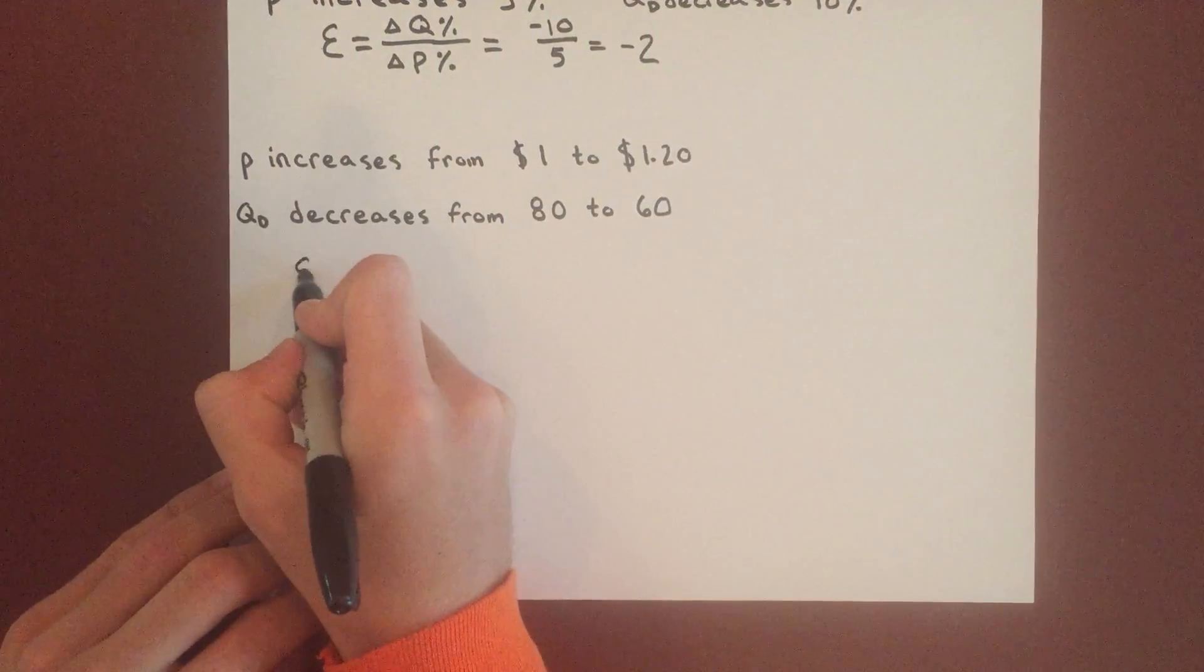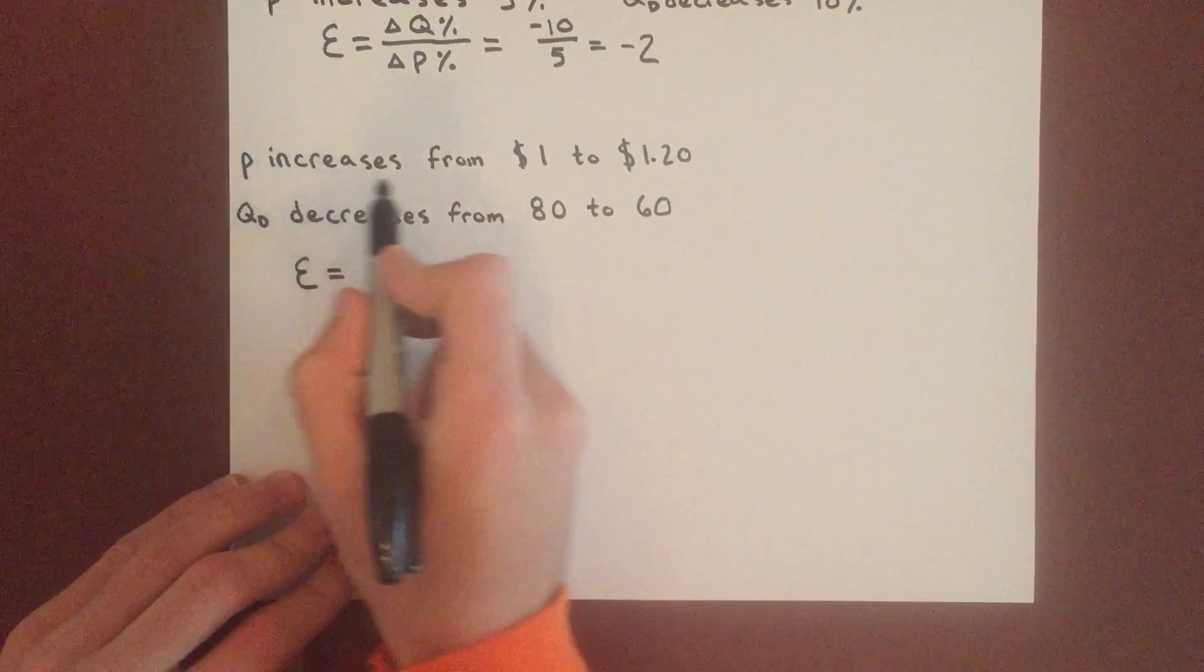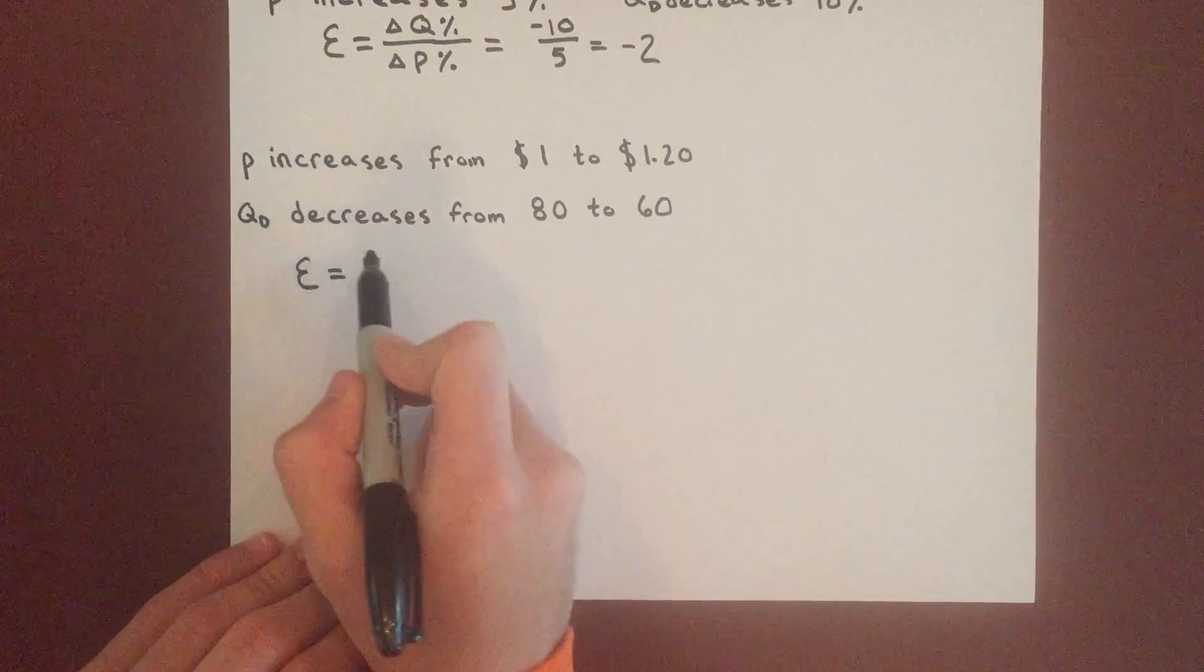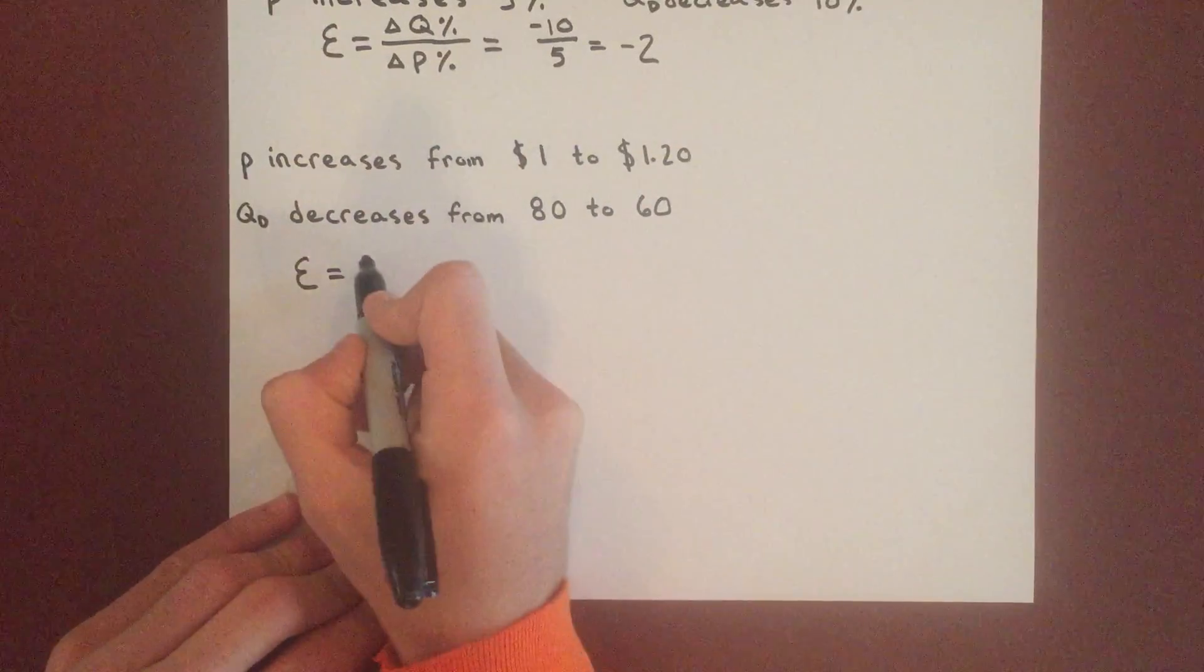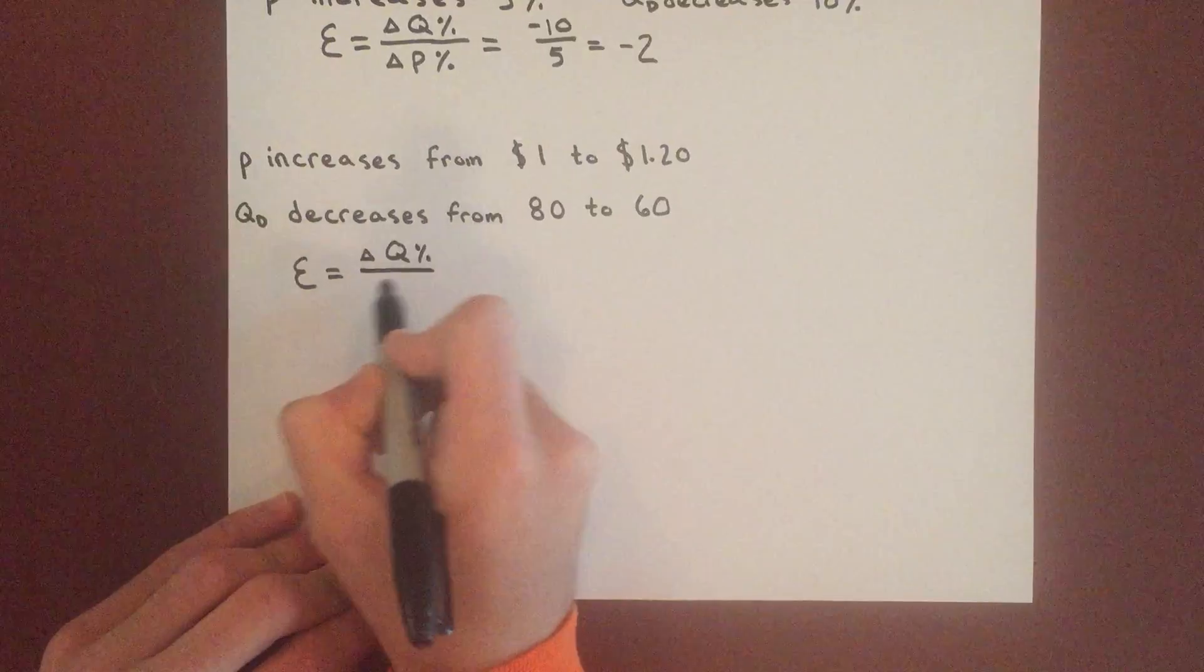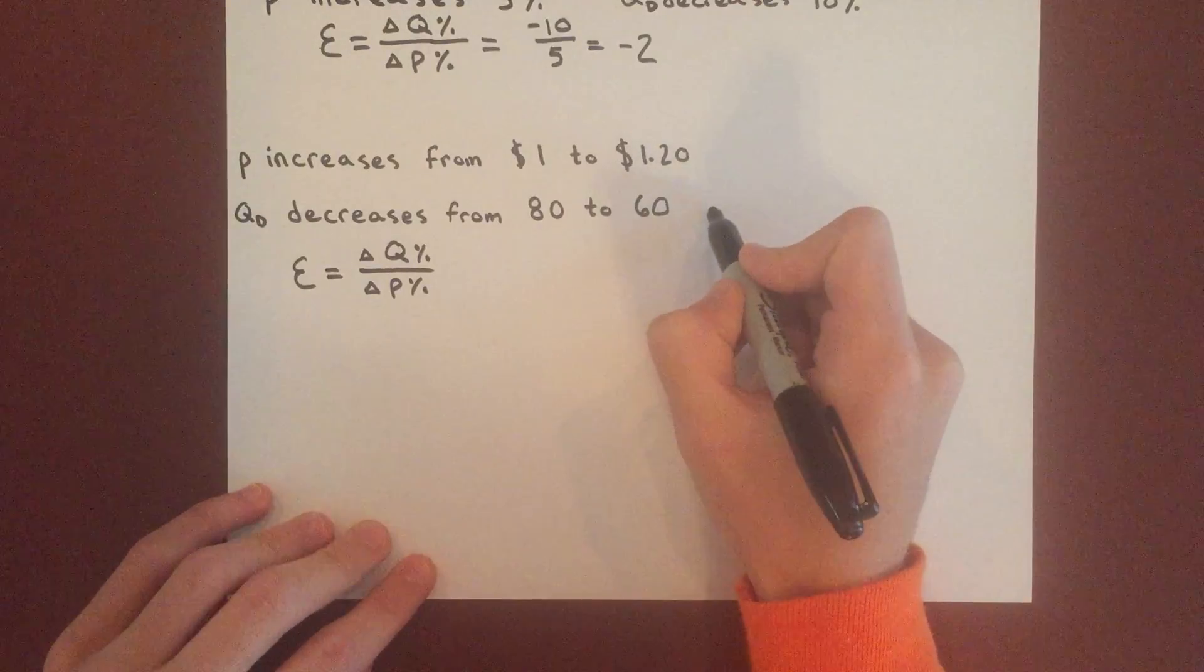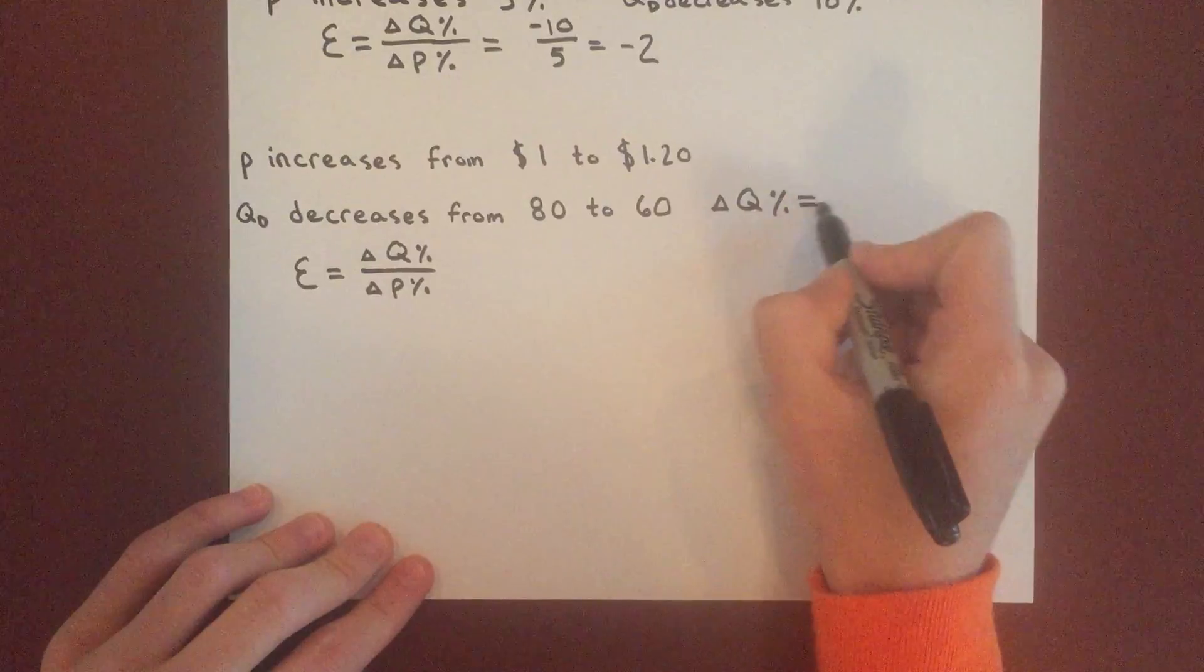But what if they don't give you percentage increases and decreases? In that case, we can still calculate elasticity. In this example, P increases from $1 to $1.20 and quantity demanded decreases from 80 to 60. We can find the percentage change in both price and quantity.